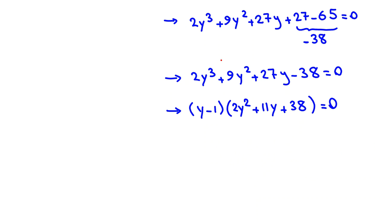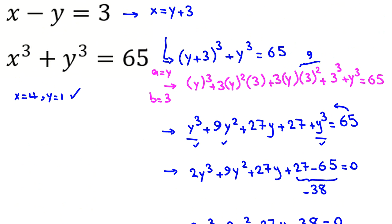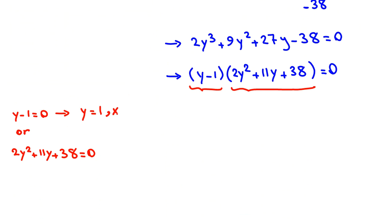Now we have two cases: either y minus 1 equals 0, or 2y squared plus 11y plus 38 equals 0. From the first case, y equals 1. And since x minus y equals 3, x equals 1 plus 3, which is 4. So one answer is x equals 4, y equals 1.